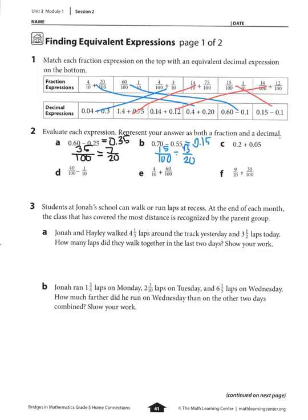Let's go to part c: 2 tenths plus 5 hundredths. I can think of that as money — 20 cents plus 5 cents equals 25 cents. As a fraction we have 25 hundredths, which is also equal to 1 quarter or 1 fourth.